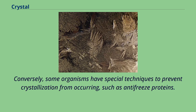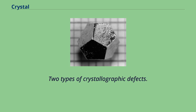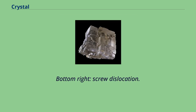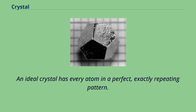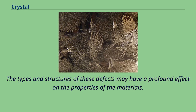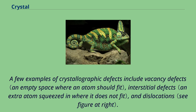Two types of crystallographic defects: top-right, edge dislocation; bottom-right, screw dislocation. An ideal crystal has every atom in a perfect, exactly repeating pattern. However, in reality, most crystalline materials have a variety of crystallographic defects — places where the crystal's pattern is interrupted. The types and structures of these defects may have a profound effect on the properties of the materials. A few examples of crystallographic defects include vacancy defects, interstitial defects, and dislocations.